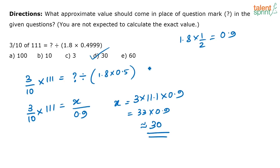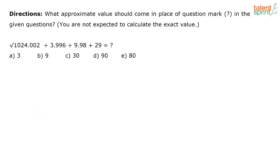The options are given in such a manner that it is very easy to narrow down. The options are 100, 10, 3, 60 — none of the options are close by. So 33 into 0.9, the closest is 30. Take that as your answer.